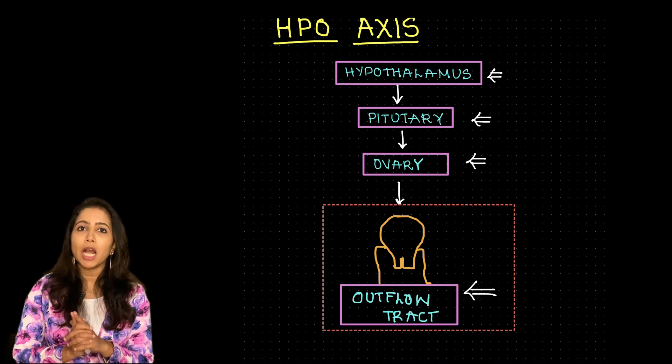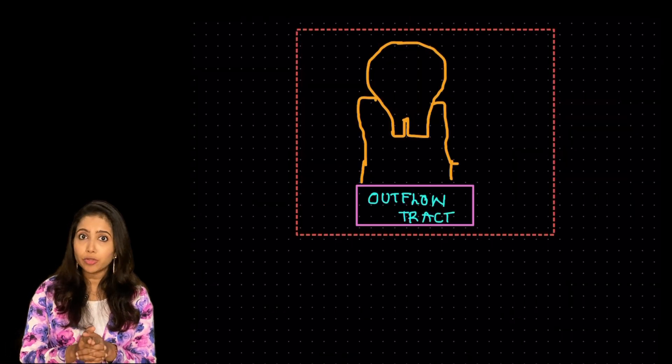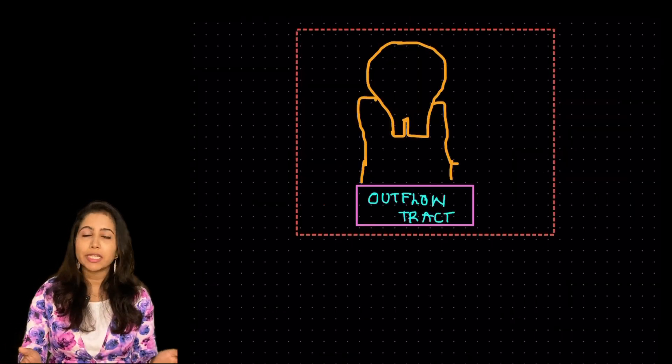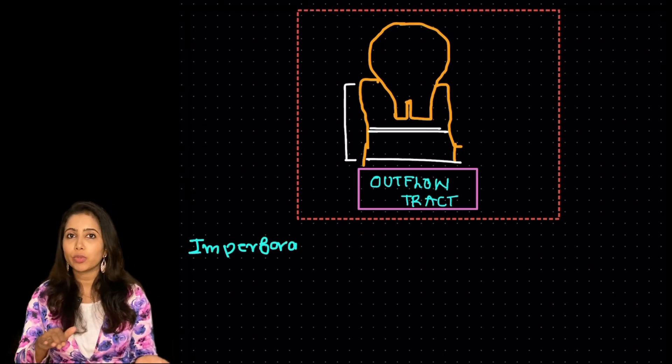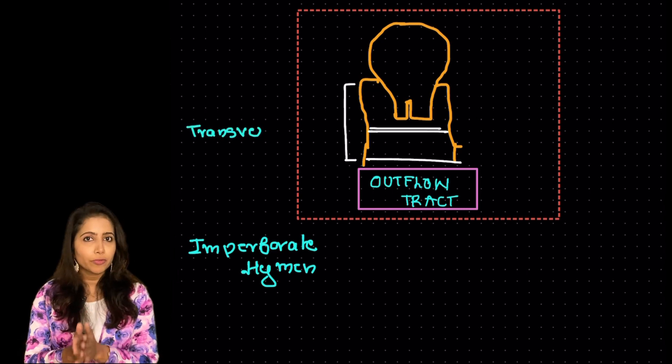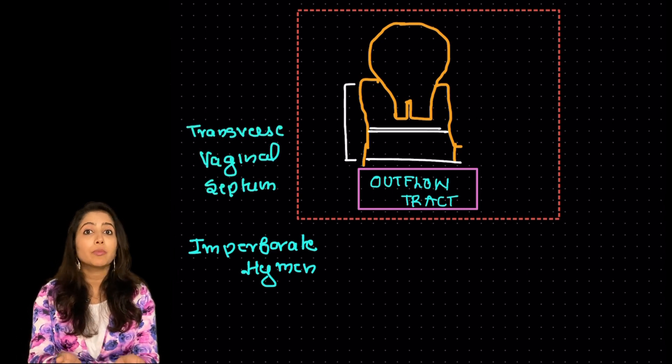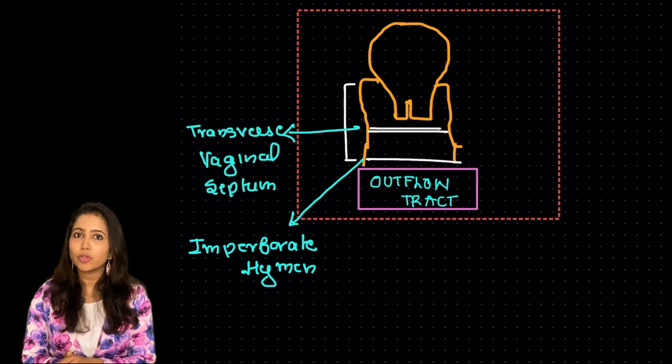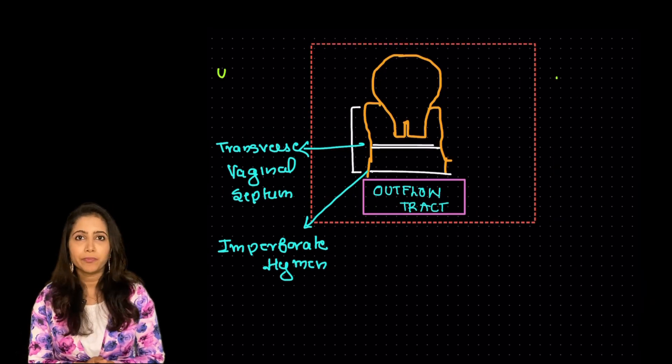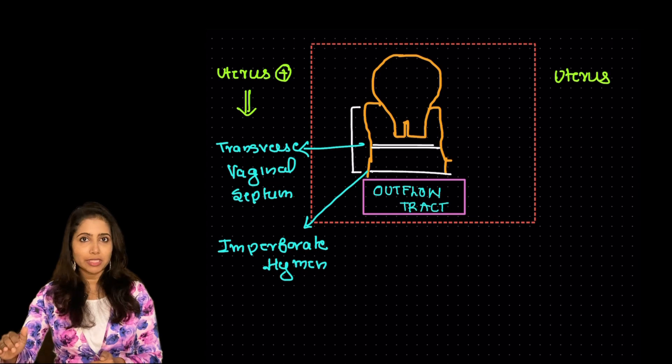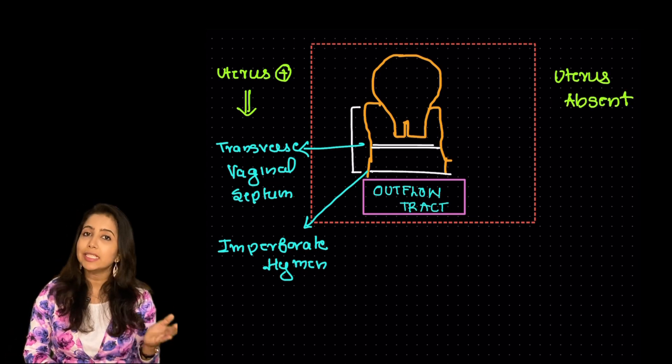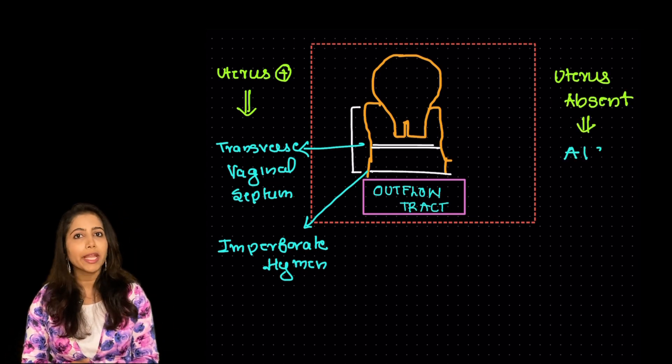So regarding the outflow tract it could be due to the problems of blockage at the level of vagina which could be either an imperforate hymen or a transverse vaginal septum. Both of these are going to prevent the blood from coming outside. This is also known as cryptomenorrhea. Or the uterus itself could be absent such as in androgen insensitivity syndrome or MRKH.